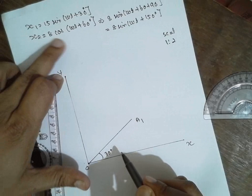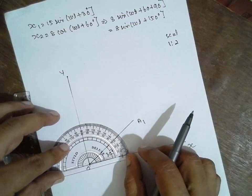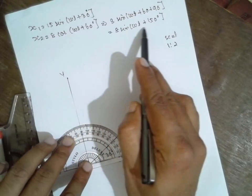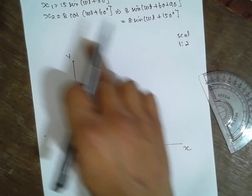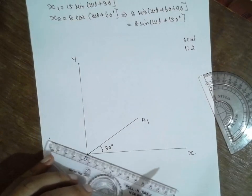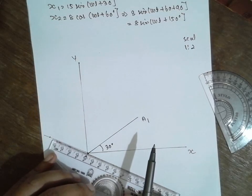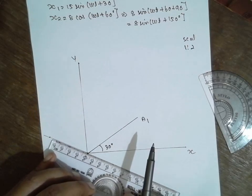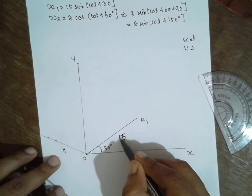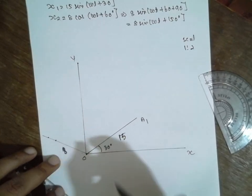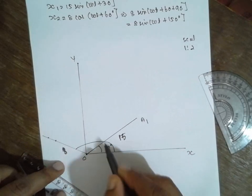Next, X2: 8 at — sorry, we have converted it to sin form, so it is 150°. 8 with scale 1:2 is 4. So A2 is drawn at 150° with length 4. The angle is 150°.